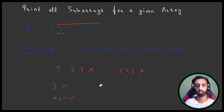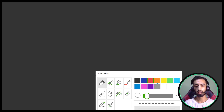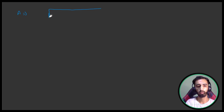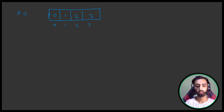This complete array 5, 3, 4, 2, 7 is also a valid subarray. Now let's see how we can print all the subarrays. To simplify, I'll take an array where the value is the same as the index — so array A with values 0, 1, 2, and 3. Now what are all the subarrays that can be formed here?